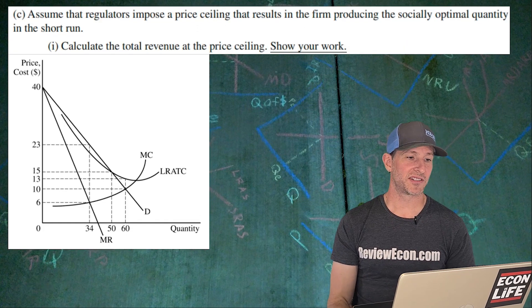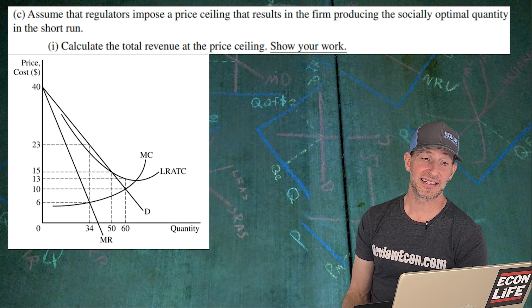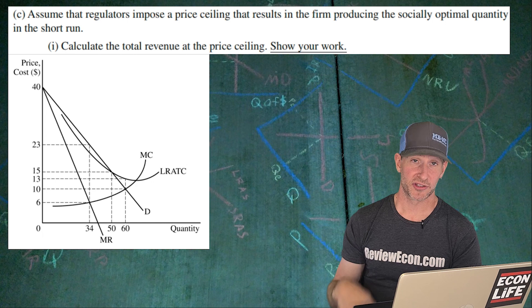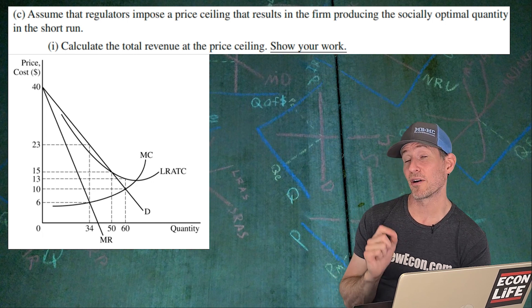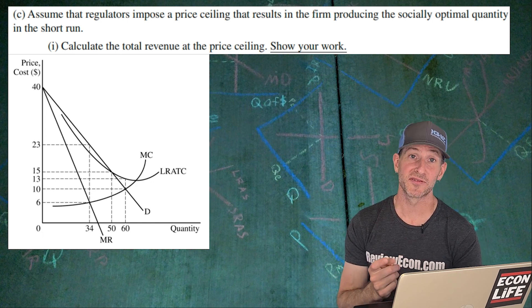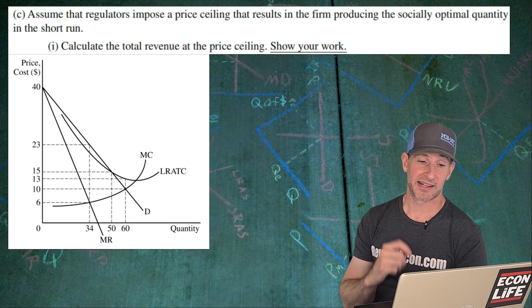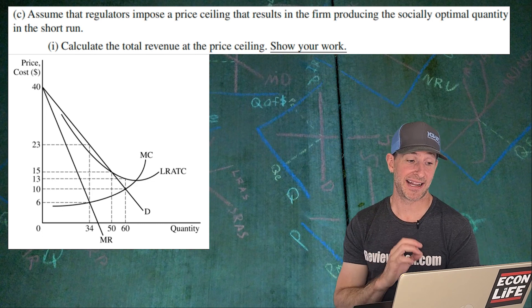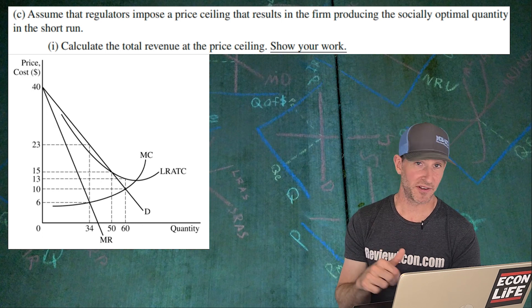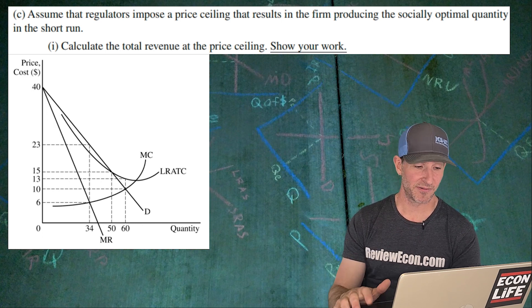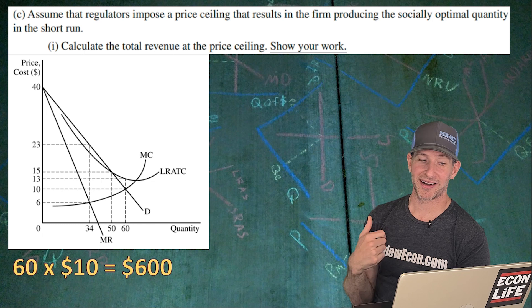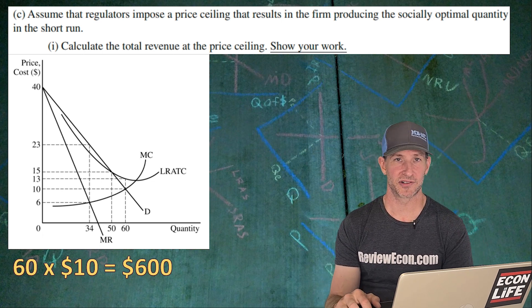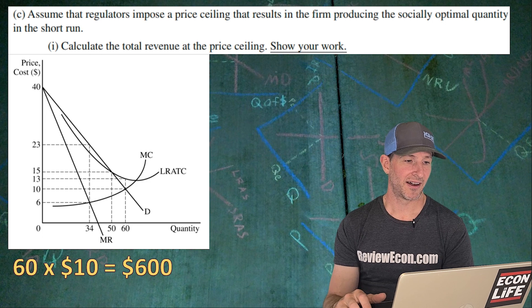Next, we're going to assume that regulators impose a price ceiling that results in the firm producing the socially optimal quantity in the short run. Socially optimal quantity is where the marginal cost equals the demand curve or price equals marginal cost. And so that means we have a quantity of 60 and a price of $10. Remember, total revenue is price times quantity. There we go. There's my work there. 60 units times $10 gives us $600.